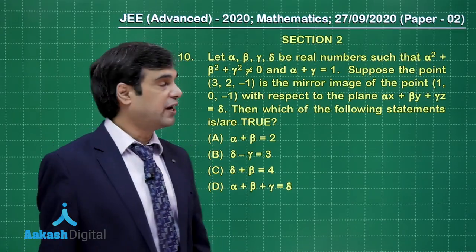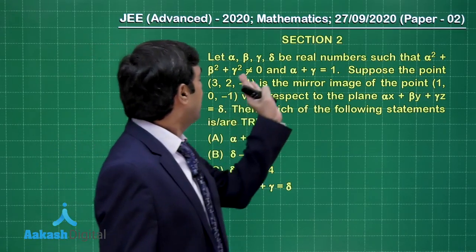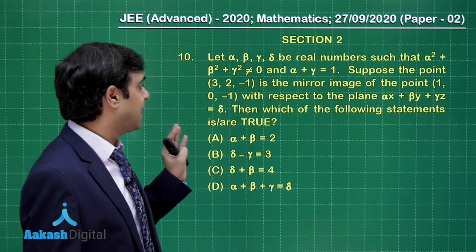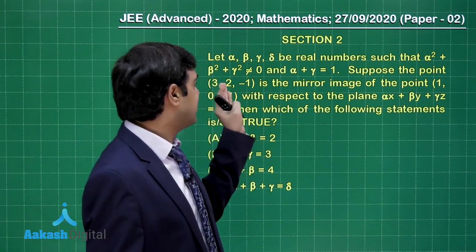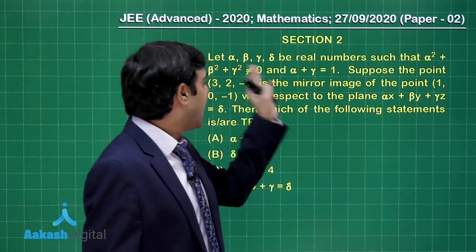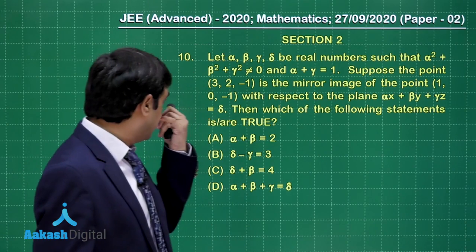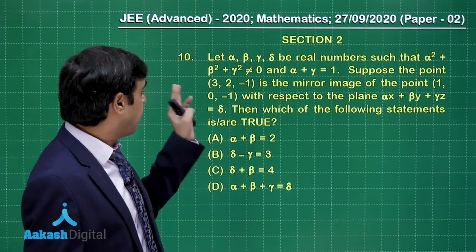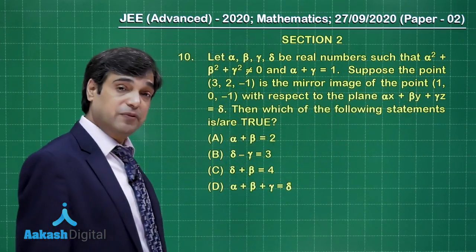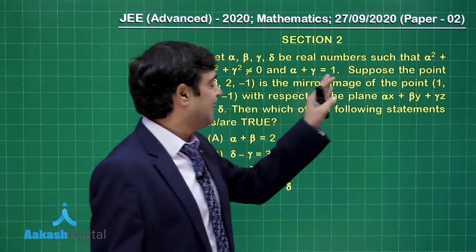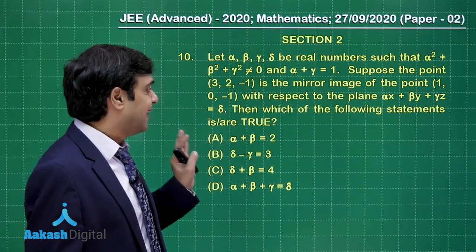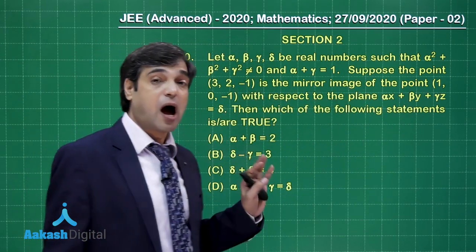Moving forward, time to take up question number 10. Let α, β, γ, δ be real numbers such that the sum of squares of α, β, γ is non-zero — that is, all are not zero simultaneously — and α plus γ equals 1. Suppose the point (3,2,-1) is the mirror image of (1,0,-1) with respect to the plane αx + βy + γz = δ. Then which of the following statements are true?